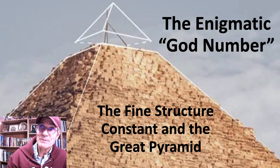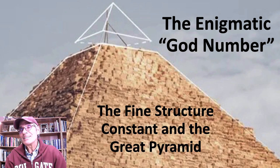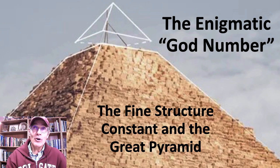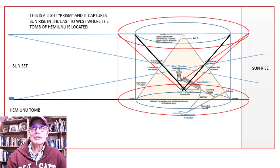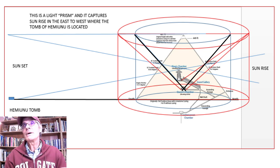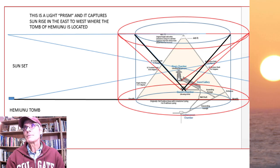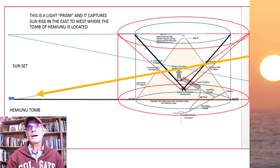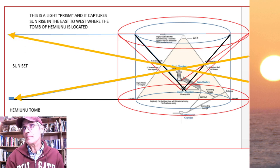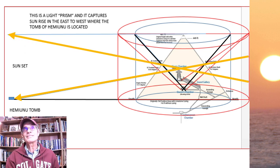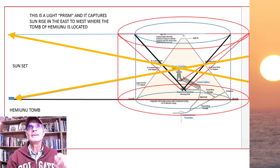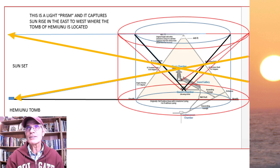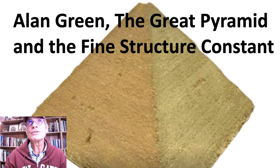The Enigmatic God Number, the fine structure constant, and the Great Pyramid — so intriguing and mysterious. But first, a quick look at something I'm working on. You can see the Great Pyramid surrounded by these cylinders. The sun rises in the east, and the angle of refraction using the Great Pyramid as a prism goes to Hemiunu's tomb exactly geographically in distance — the architect of the Great Pyramid. Very interesting. Stay tuned for that.